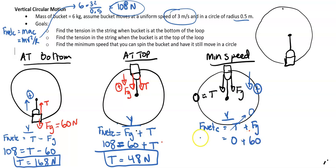F net C is MAC or you could say M times V squared over R. The mass is 6. Velocity is what we want to find. Over radius is 0.5 equals 60. Go ahead and do some fun math. So we have 6V squared equals, multiply both sides by 0.5, that's going to be 30.